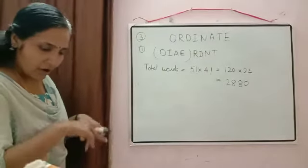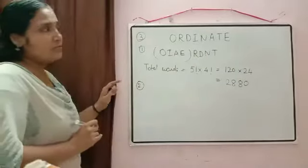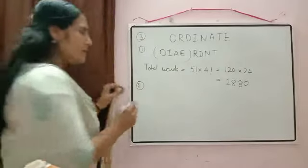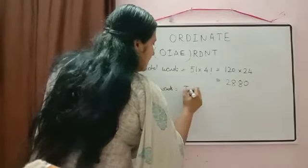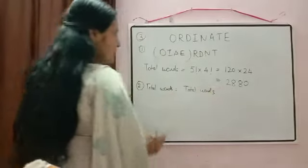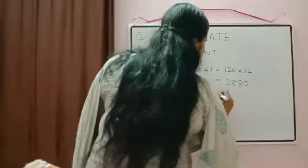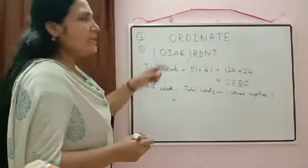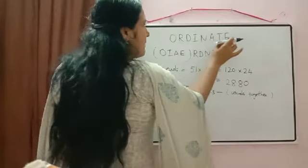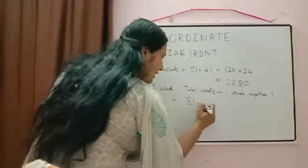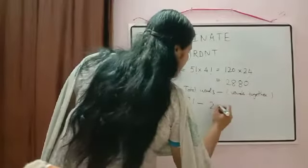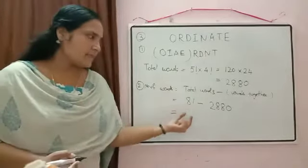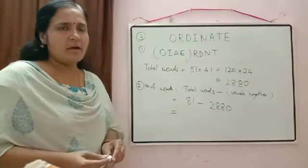Second condition: vowels never come together. Total arrangements of all 8 letters = 8!. Subtract the case where vowels are together (2880). Answer = 8! − 2880. Students should calculate 8! and complete the subtraction.